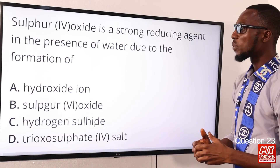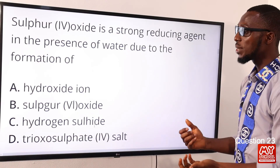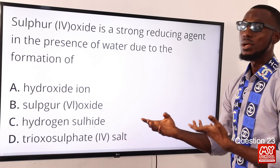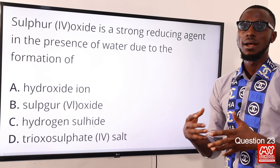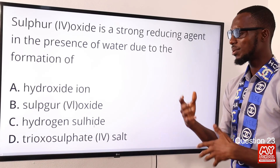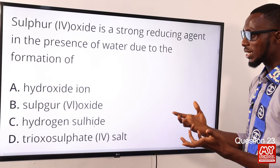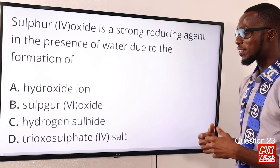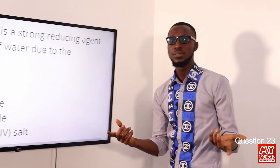Question twenty-three: SO₂ is a strong reducing agent in the presence of water due to the formation of what? We are talking about the formation of trioxosulphate(IV) salt — sulphite (SO₃²⁻). This readily donates electrons to oxidizing agents. So the correct option is option D for trioxosulphate(IV), SO₃²⁻.